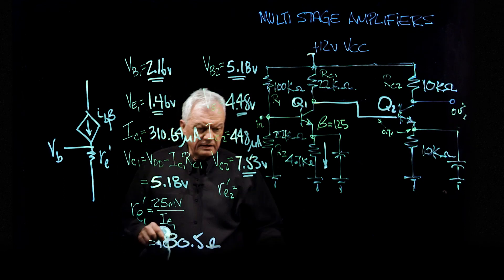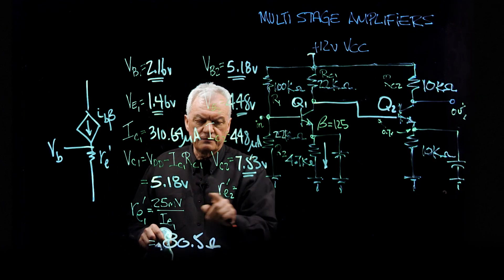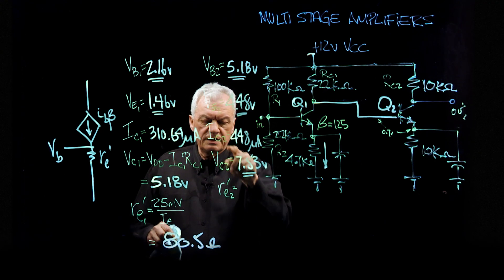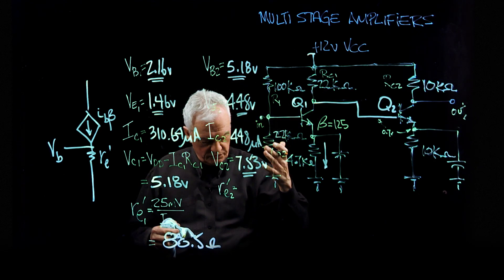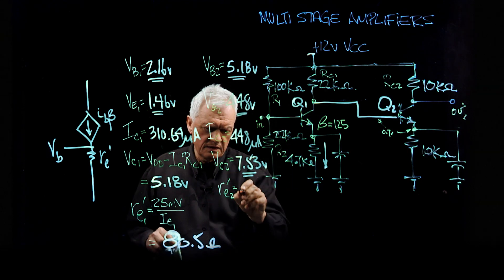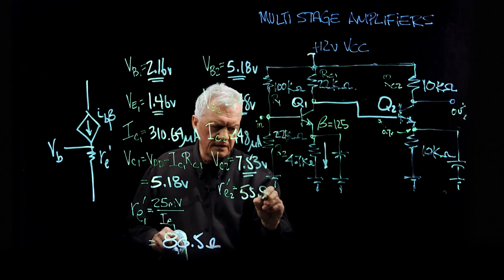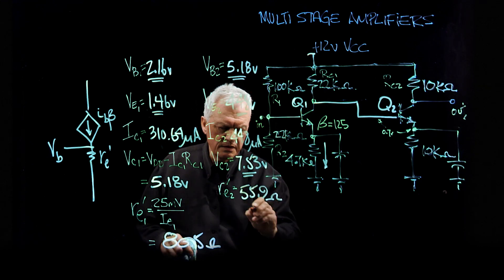And we should do the same thing on this side here. So if we do 25 millivolts over the emitter current here, this will be equal to 50.9 ohms.